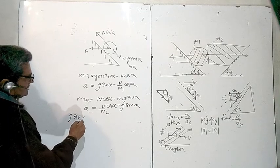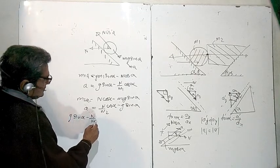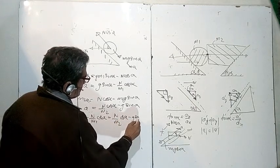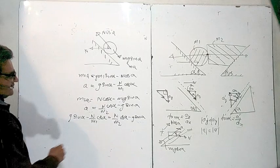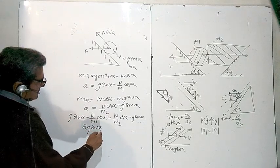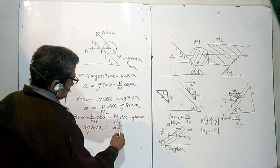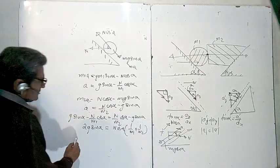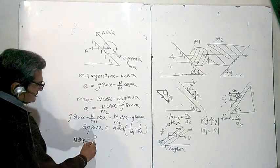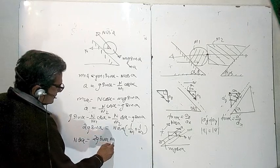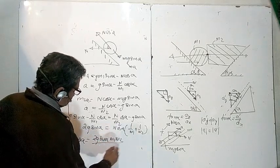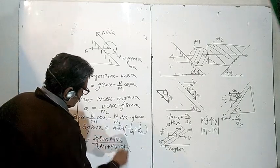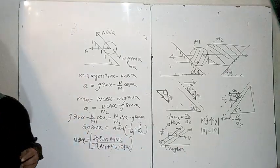So N cos alpha, combining both equations: 1 upon m1 plus 1 upon m2. Therefore N cos alpha is equal to twice g sin alpha times m1 m2 upon (m1 plus m2), divided by cos alpha. This is our answer — this will be the reaction force N.